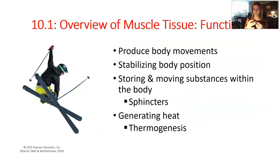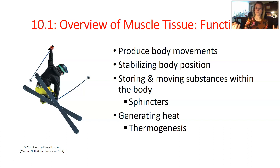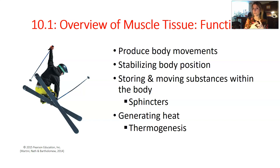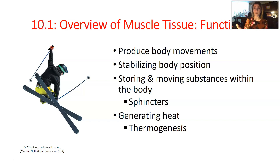All kinds of muscles produce body movements. Skeletal muscle moves our skeleton. Cardiac muscle produces movements that propel blood through our vascular system and out to the rest of the body. Smooth muscle also propels substances — for example, food through the stomach, small intestine, and large intestine, and eventually out of the body. So these are all forms of body movements.